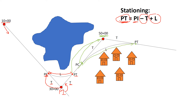Let's put in some hypothetical values. Assume the tangent length is 500 feet and the length of the curve is 1,200 feet. Moving from our PI to the PC, we subtract 500 feet, giving a PC station of 45. Then moving along the 1,200-foot length of curve gives us a PT station of 57.